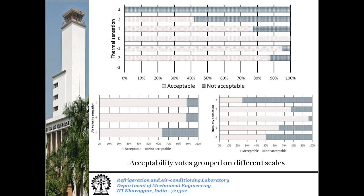When humidity is not felt to be just right, acceptability is greatly compromised. But over the survey, we found that 82% of the votes were for humidity being just right or slightly humid. This was even though partial pressure of water vapor at 3 kPa was recorded on three separate days. This speaks to a remarkable level of acclimatization to humidity amongst the occupants.